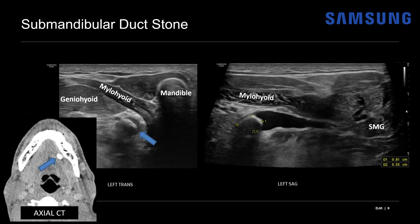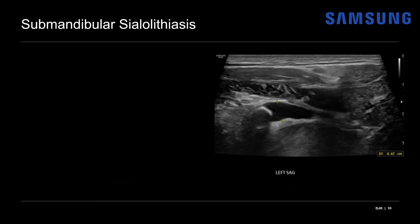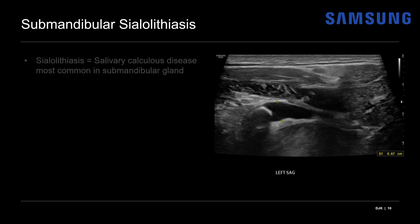The CT correlate here is an axial CT image showing the stone at the left floor of mouth next to the mandible. On the sagittal correlate for this sagittal ultrasound image, we also see the stone — though the dilated duct is not quite as visible on CT and is more conspicuous on ultrasound. This is a nice example of submandibular sialolithiasis.